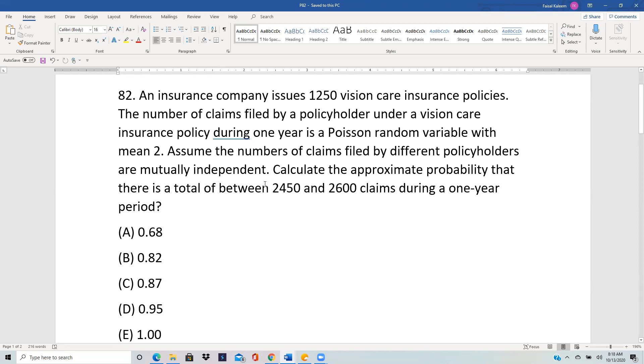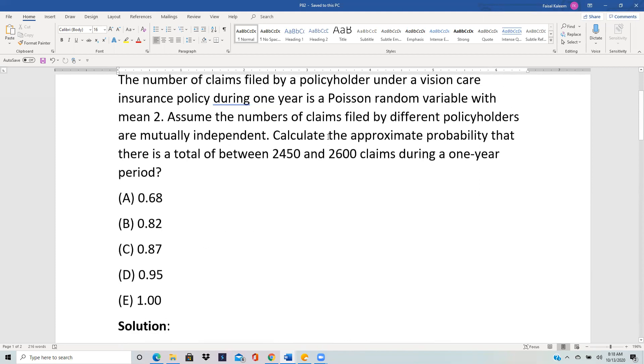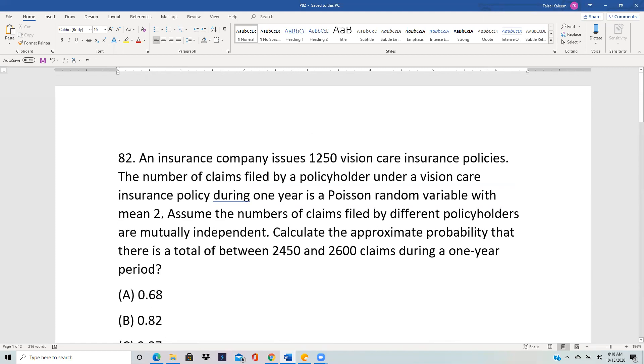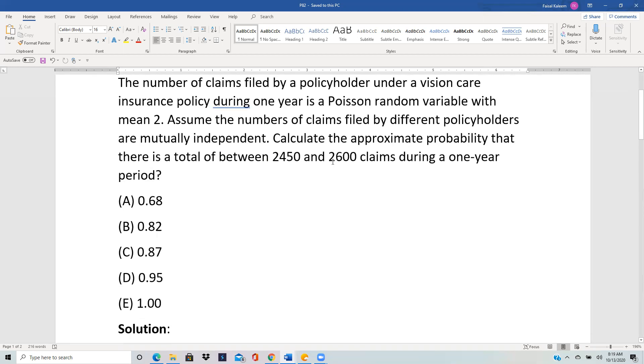So we use the fact that since the sample size is bigger than 30, the sum is approximately normal. And for the Poisson, the variance is equal to the mean. So the mean of each variable here is 2, so the variance will also be 2. And so the standard deviation of each variable would be square root 2, and there are 1250 of them.